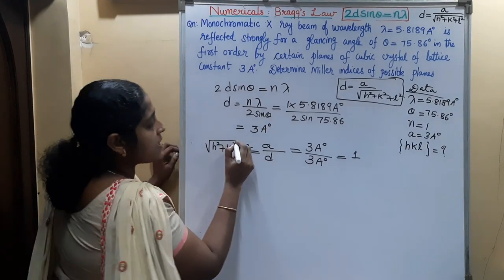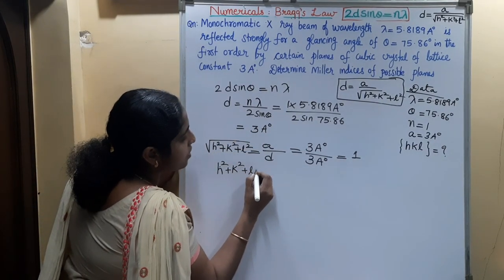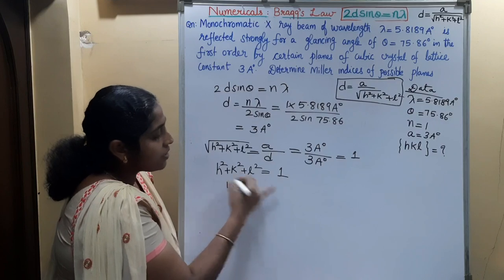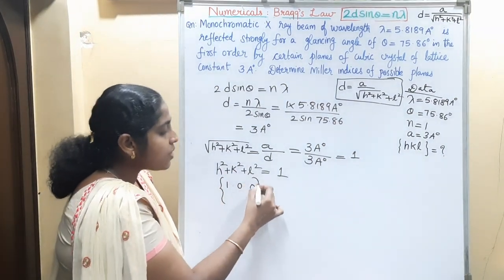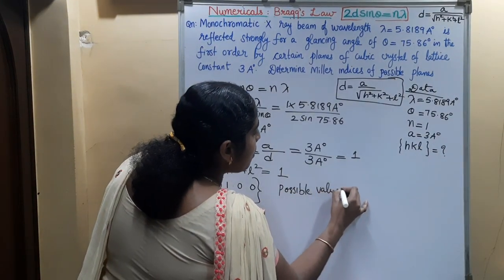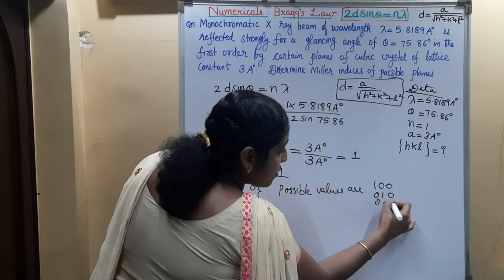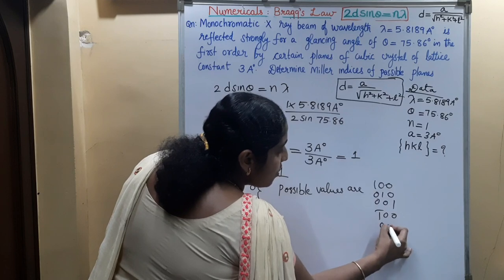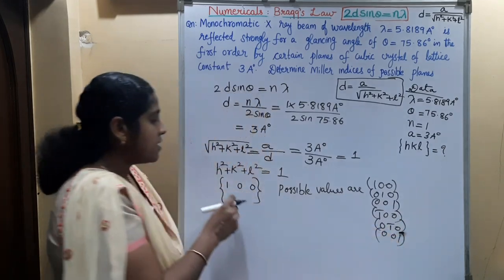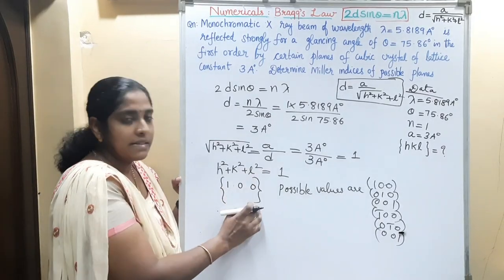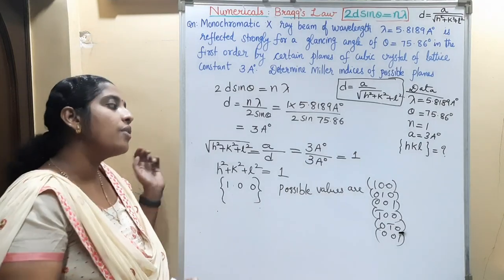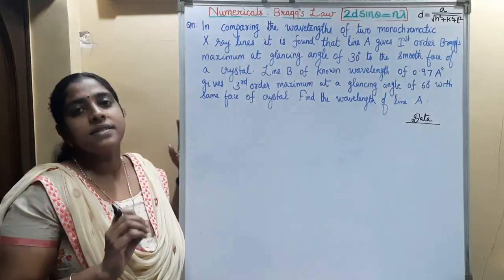From the interplanar spacing, we find root of H squared plus K squared plus L squared equals A divided by D, that is 3 Angstroms divided by 3 Angstroms, which equals 1. So H squared plus K squared plus L squared equals 1. The possible Miller indices are therefore from the family (1,0,0), including (1,0,0), (0,1,0), (0,0,1), (1-bar,0,0), (0,1-bar,0), and (0,0,1-bar). Six members belong to this family, and any of these combinations is possible.